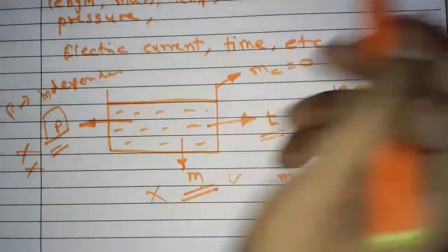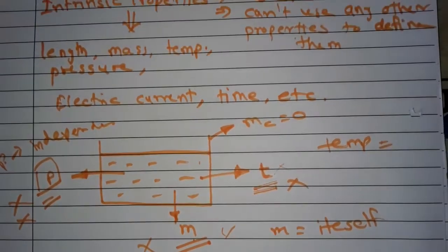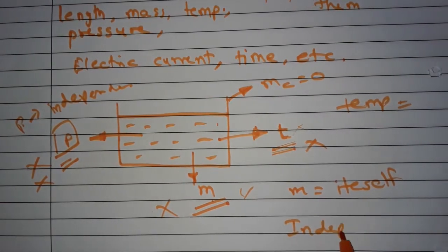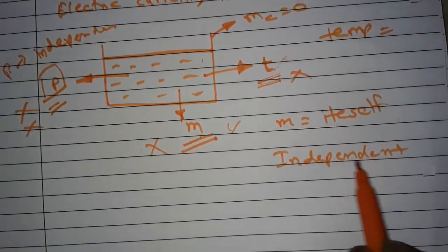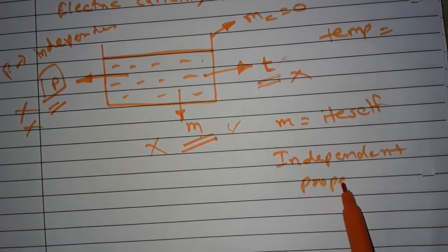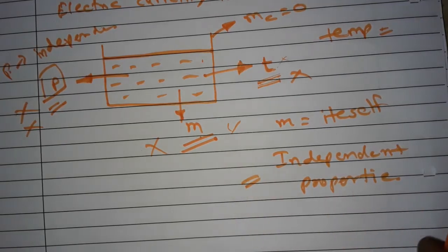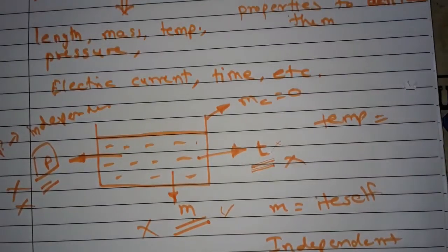So intrinsic properties are actually independent properties — they don't depend on any other properties to define themselves. Now friends, we will see the extrinsic properties.